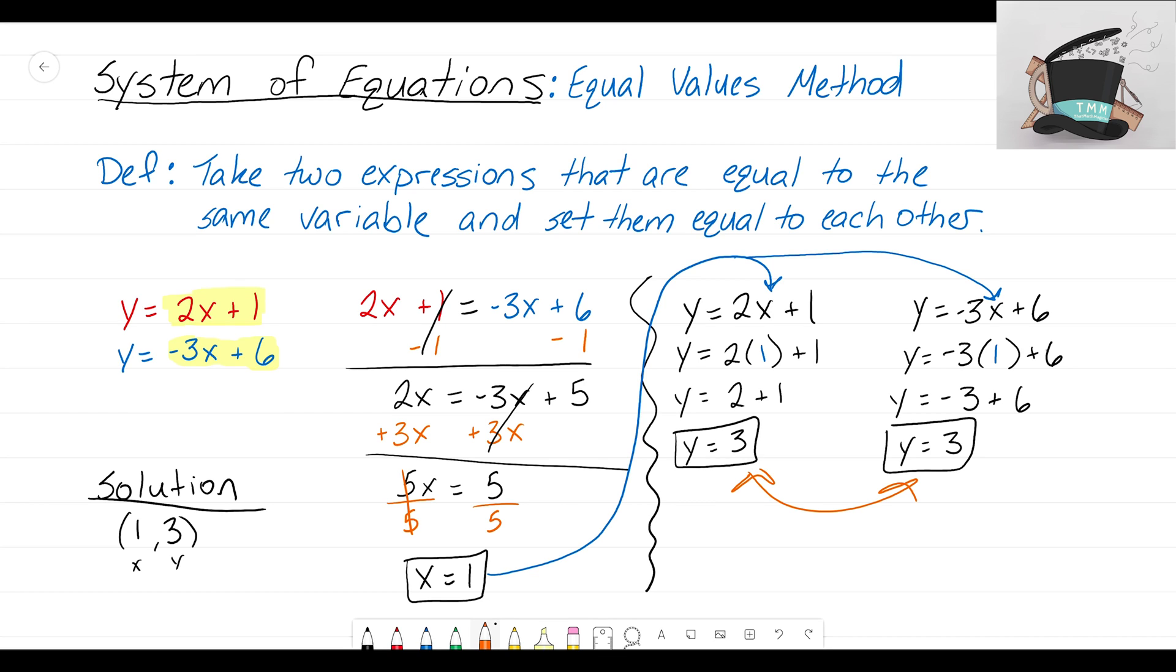To find your y value, just as long as you do the math correctly and that you also write the equation correctly. I wrote a 1 here on accident and then I would have gotten the wrong answer. But that is what the equal values method is. You take the two expressions that are equal to the same variable and you set them equal to each other. You then solve for the variable you have.